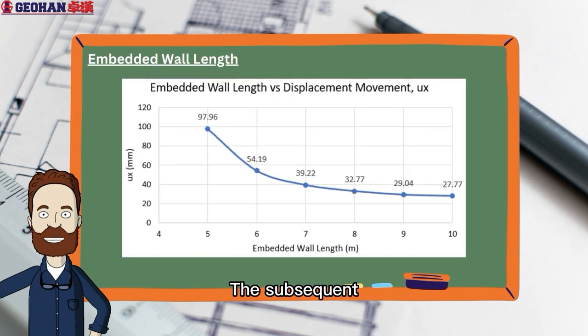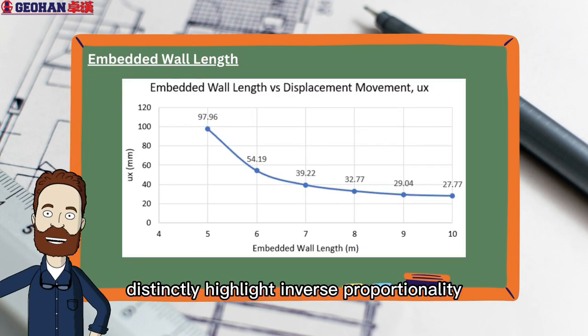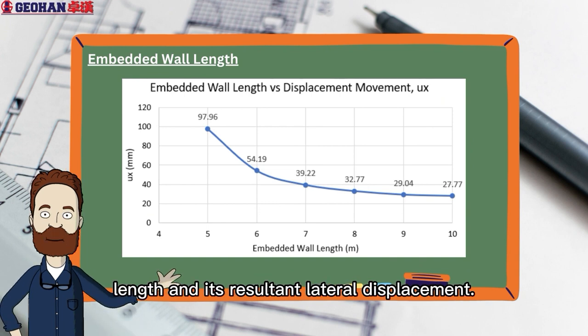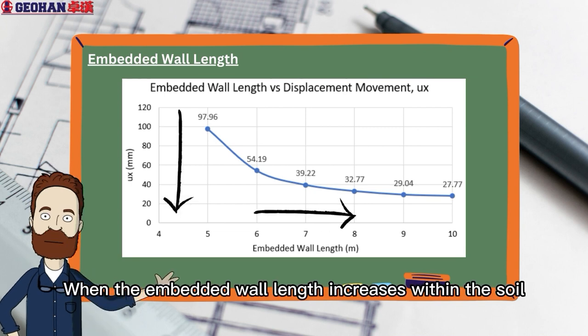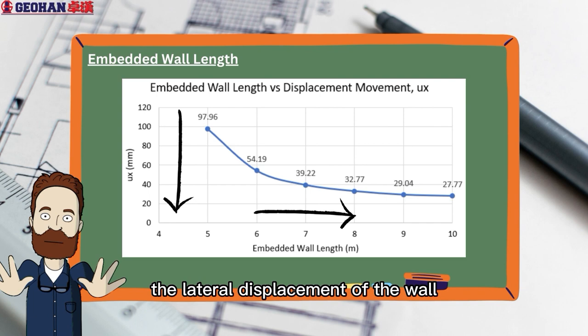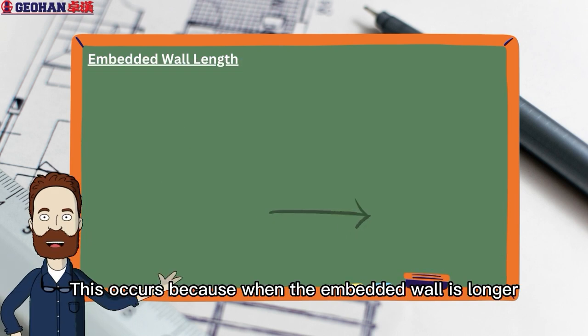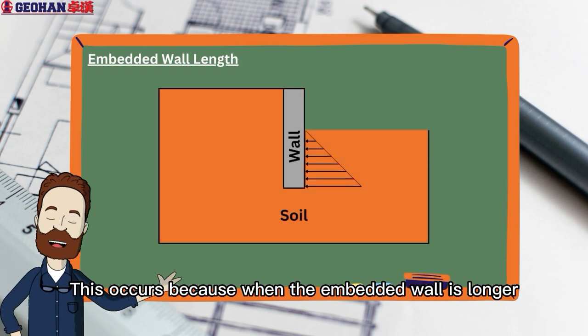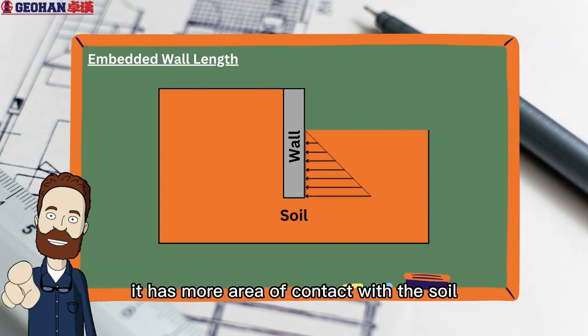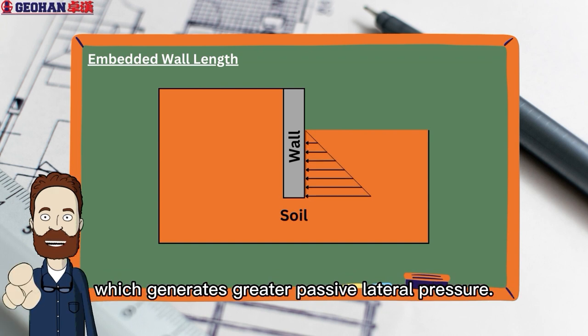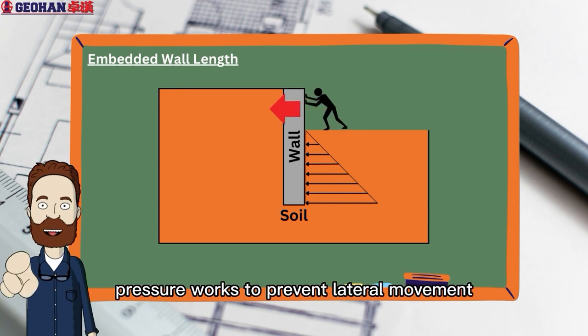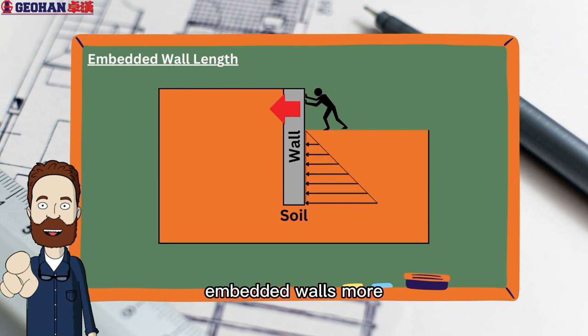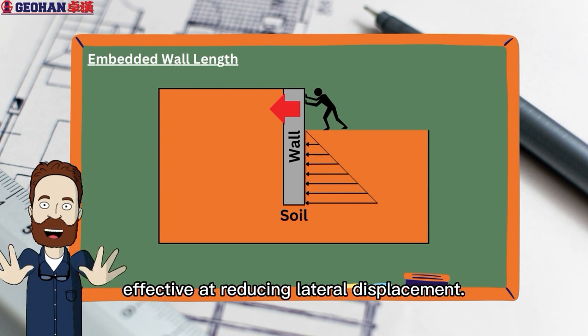The subsequent empirical observations distinctly highlight inverse proportionality between the embedded wall length and its resultant lateral displacement. When the embedded wall length increases within the soil, the lateral displacement of the wall proportionally decreases. This occurs because when the embedded wall is longer, it has more area of contact with the soil, which generates greater passive lateral pressure. This increased pressure works to prevent lateral movement, making longer embedded walls more effective at reducing lateral displacement.